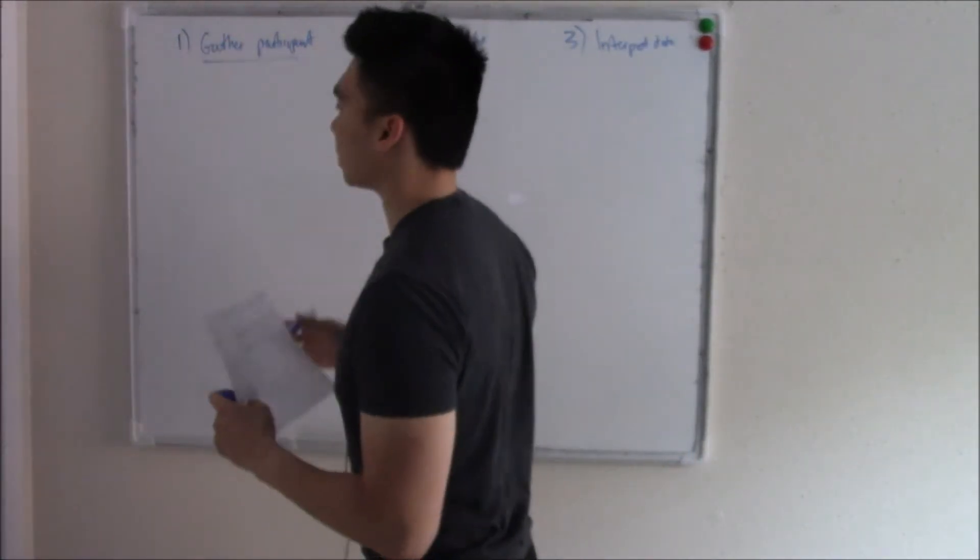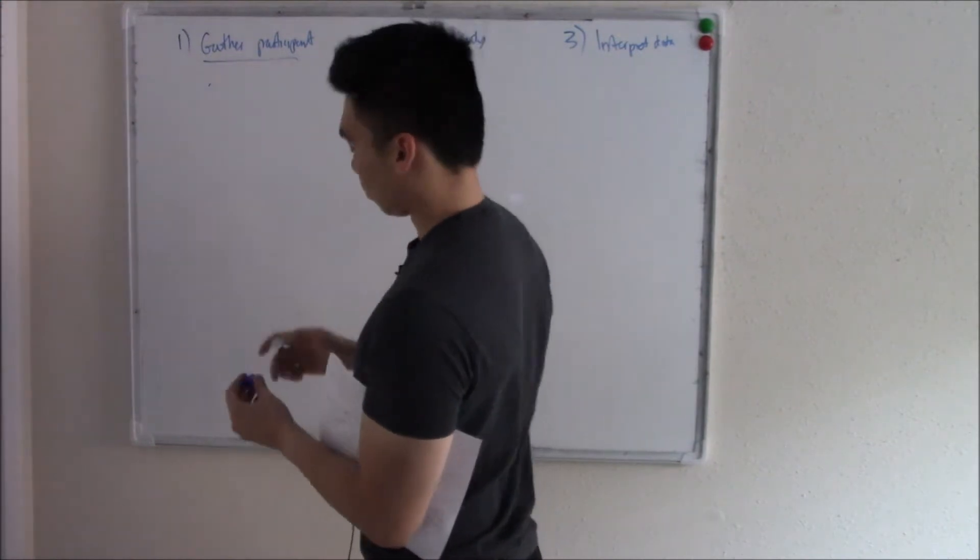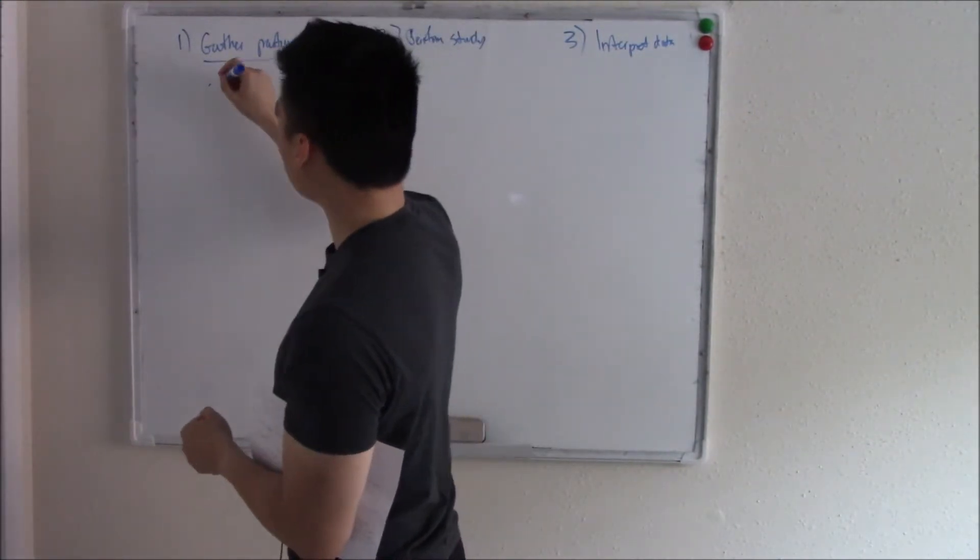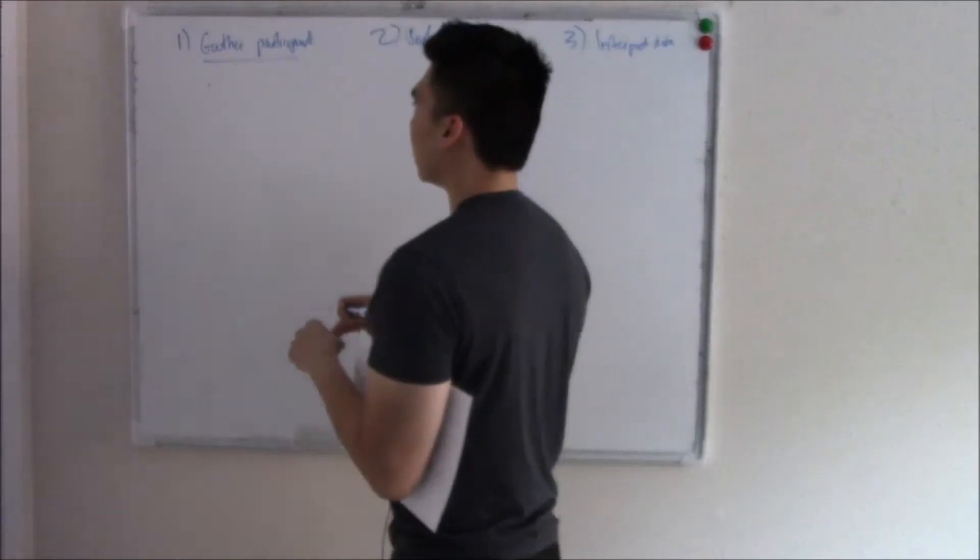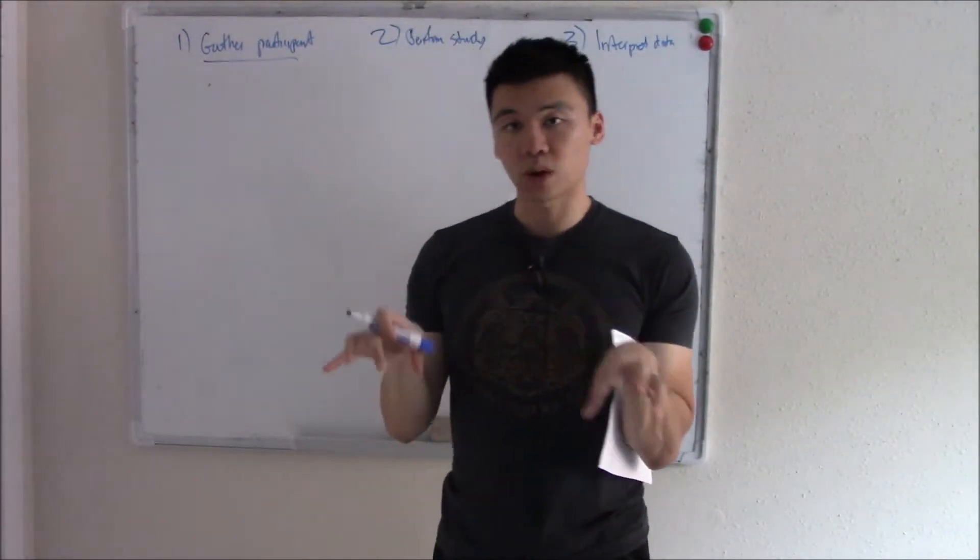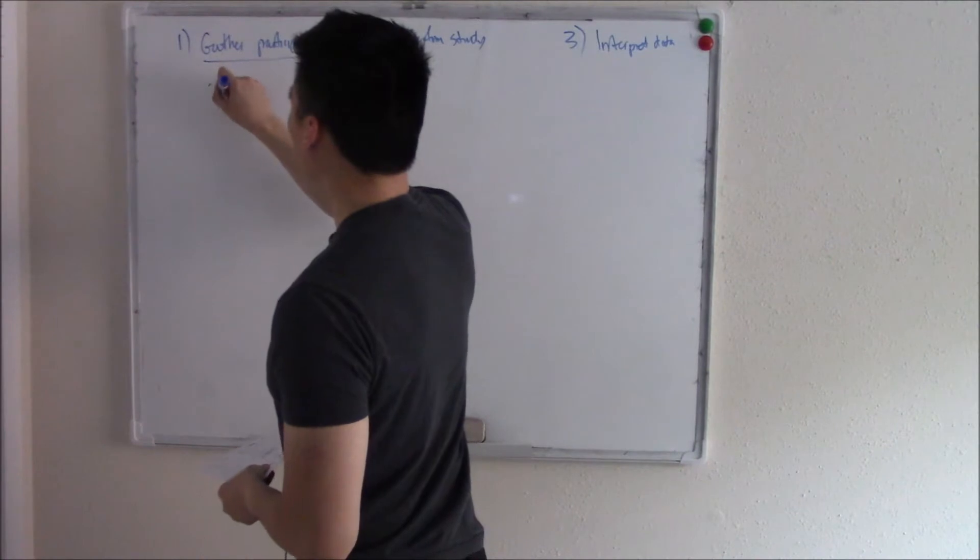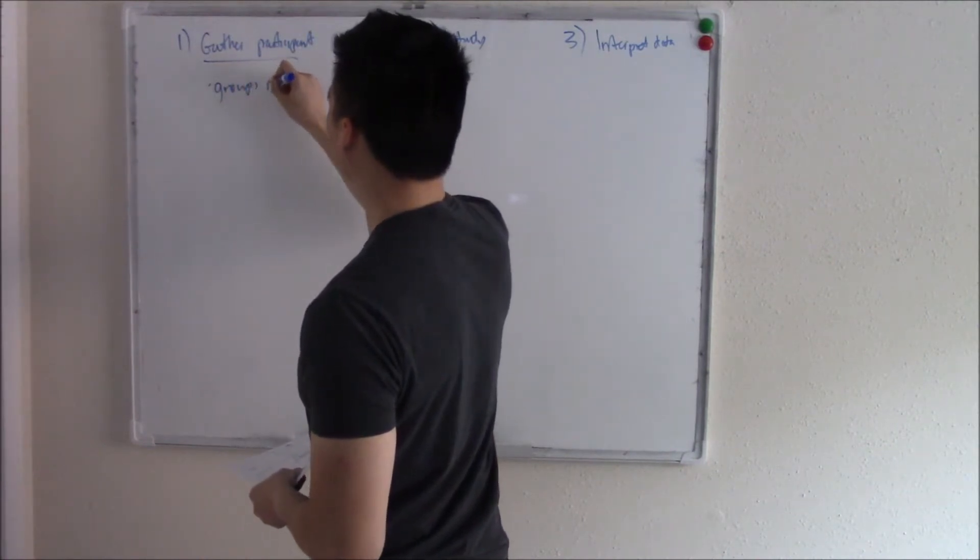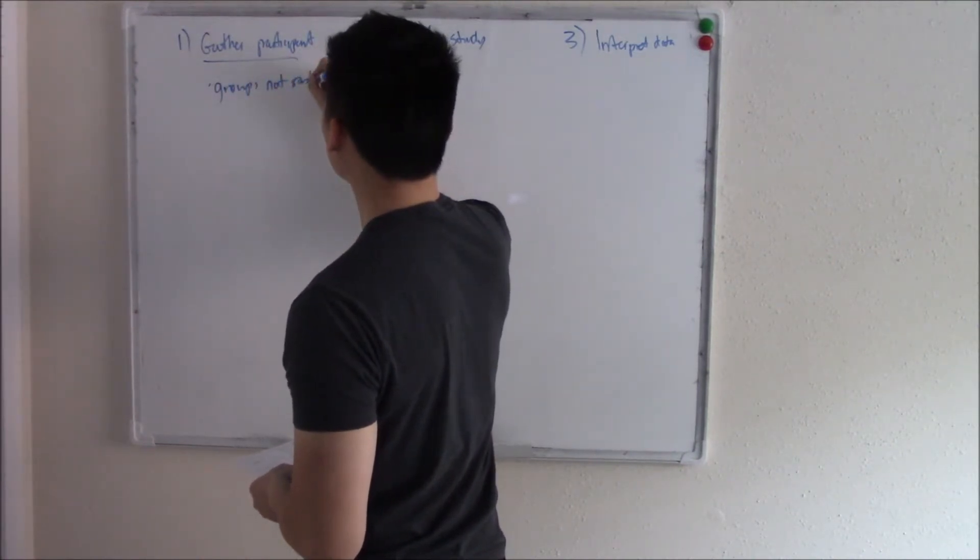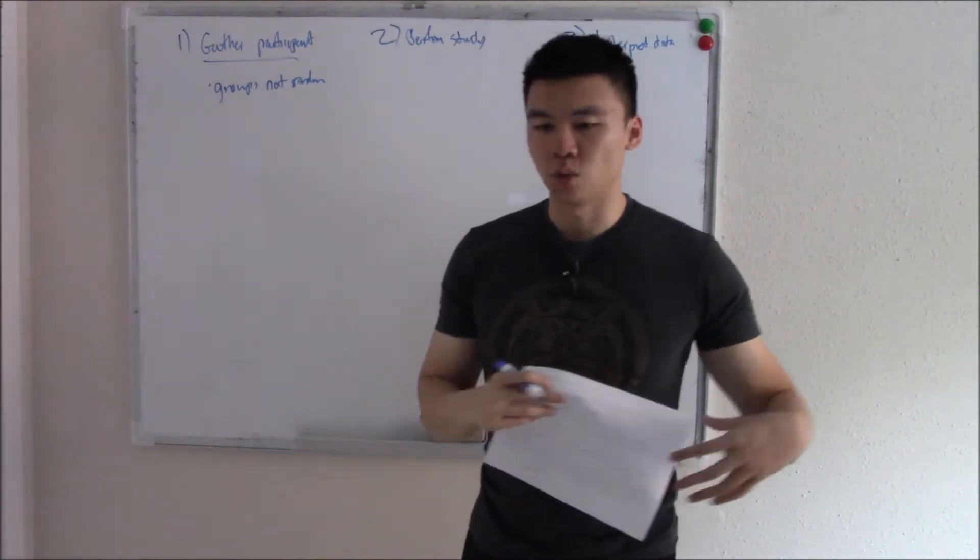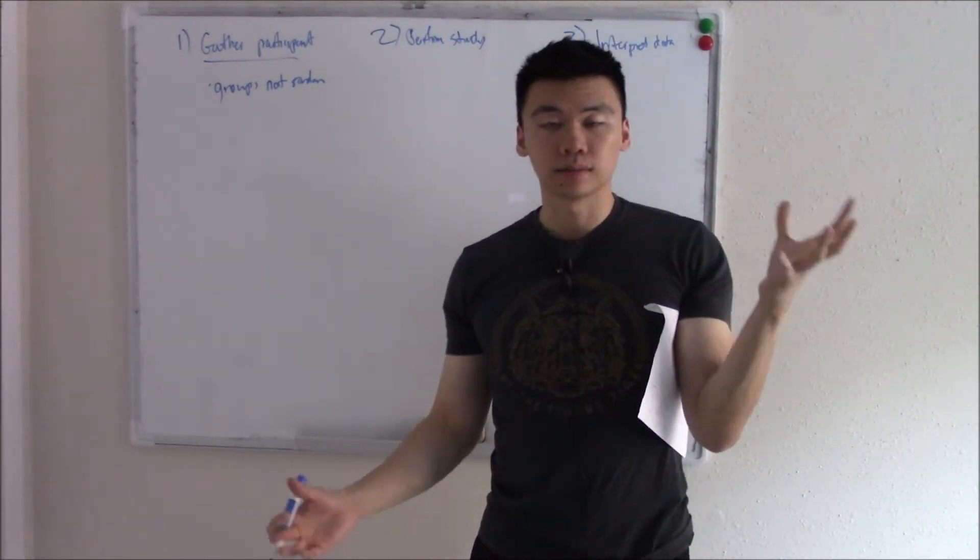One way is by not randomizing your participants. Anytime you gather participants, you want to make sure the groups are random, that they're kind of similar to each other. If groups are not random, then we have a problem. You don't want one group to be way different than the other group.